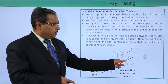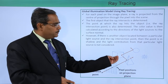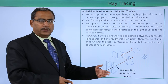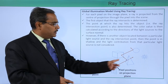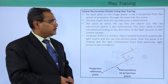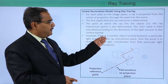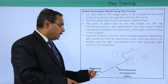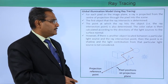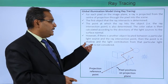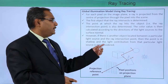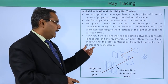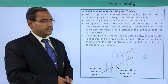When this particular object is being shadowed or obstructed by another object along the path of the ray, then obviously that particular object will not be considered. If there is another object located between a particular light source and the ray intersection point, the point is in shadow and the light contribution from that light source is not considered.